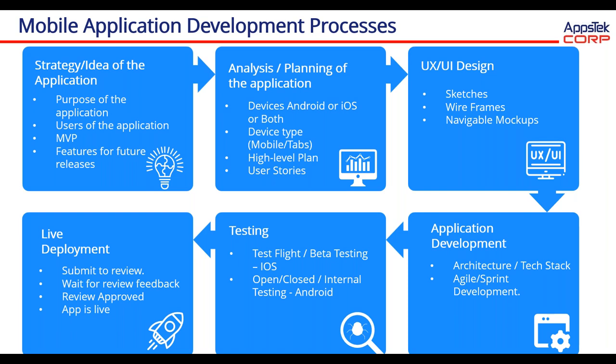For Android testing, Google has different streams: open testing, closed testing, and internal testing. Each release will be made to the appropriate stream. Apart from this, once a build is made and uploaded, users can be given a link to download the APK file directly and can join the test streams as well.